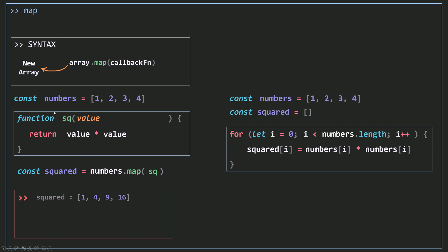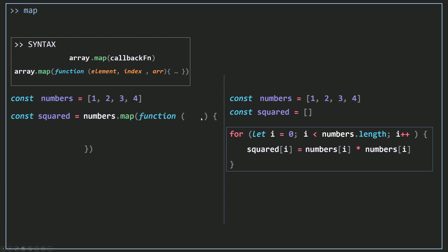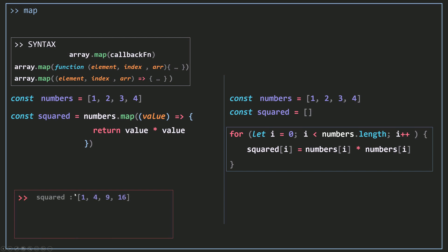Now if you don't want to create a named function and pass it as a callback, you can just use an anonymous function. You call map and pass in your anonymous function — the first parameter is always going to be the element, then return value times value and you're going to get the same results. You can also use an arrow function instead of an ordinary function, calling map and passing in an arrow function with value as the parameter and returning value times value.